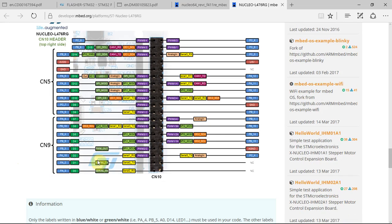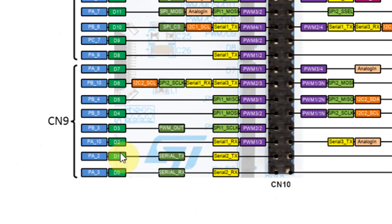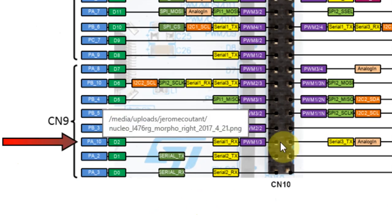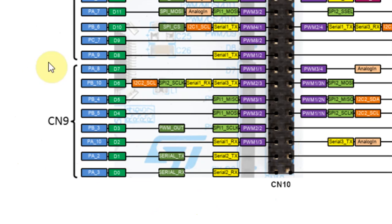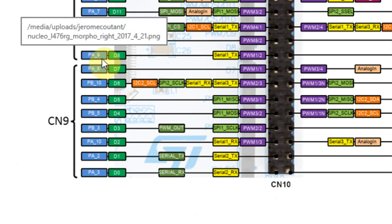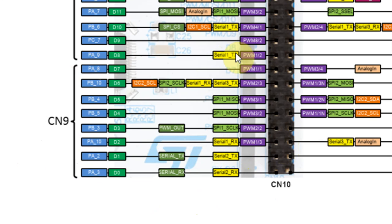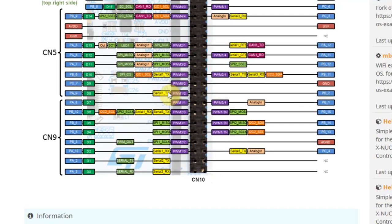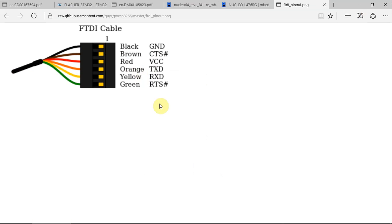Coming back to the connectors, we have PA10 — that's the third pin — and there's PA9. So we have UART01 receive, UART01 transmit, and of course we need a ground.